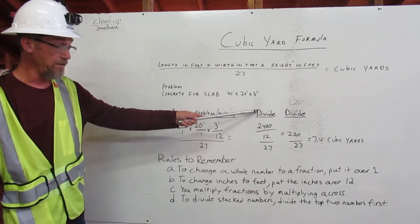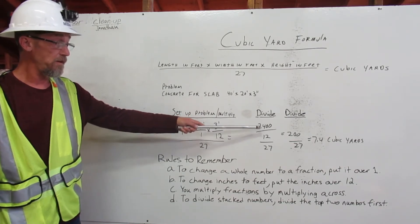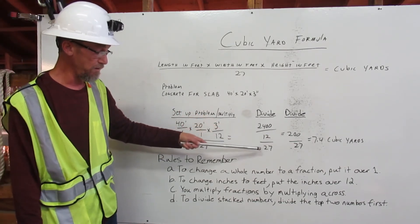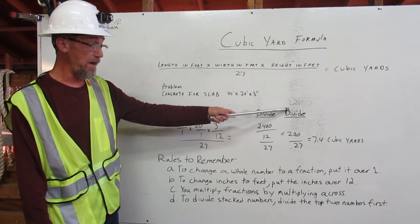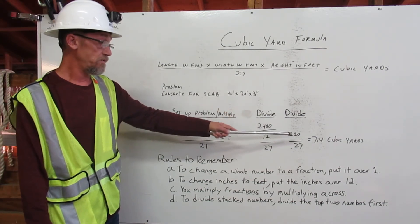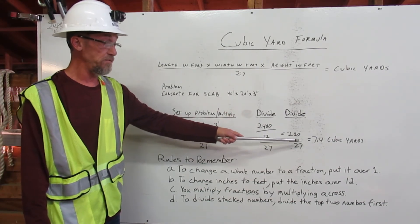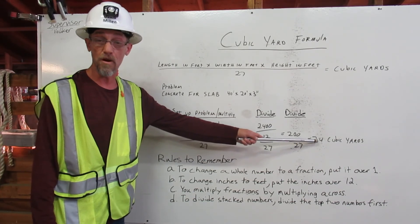And you divide. 2,400 divided by 12, 27 gives you 7.4 cubic yards. Thank you.